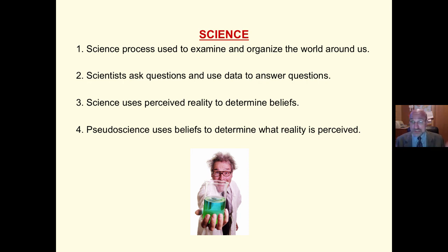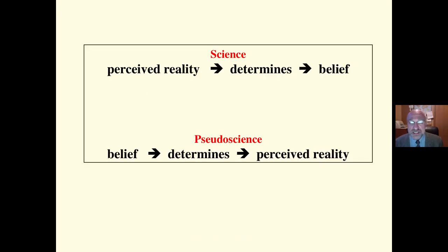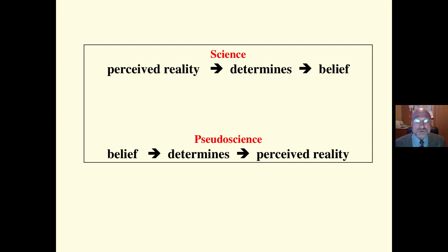Scientists use data to determine their beliefs. Pseudoscientists use their beliefs to determine what is reality or what data is perceived. We want to be scientists — we want to perceive reality and use that to determine our beliefs. We do not want to be pseudoscientists who start with a belief and then only look for data which reconfirms that belief system.